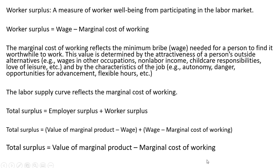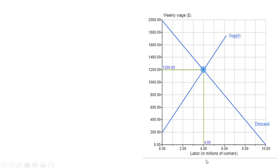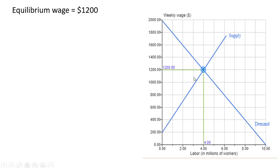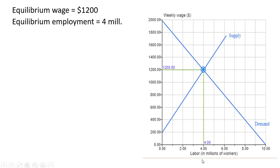Let's look at a graphical example. Here's a labor market with the weekly wage on the vertical axis and labor in millions of workers on the horizontal axis. Firms demand labor — we have a downward sloping labor demand curve — and households supply labor via an upward sloping labor supply curve. The equilibrium wage is $1,200, where the quantity demanded of workers equals the quantity supplied, and the equilibrium level of employment is 4 million workers.